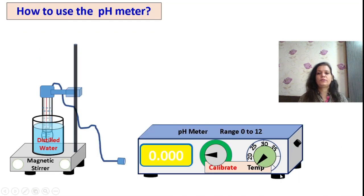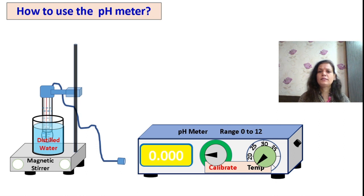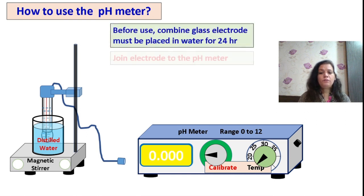When using the pH meter, always keep the electrode in distilled water to keep the membrane hydrated, as the membrane tends to dehydrate and will not function properly if left exposed. The glass electrode can be used to measure the pH of colloidal and turbid solutions and is easy to operate. However, it cannot be used at higher temperatures or for fluoride solutions. Before switching on, always attach the pH electrode to the pH meter.